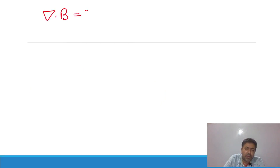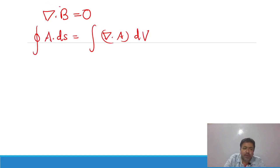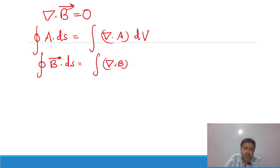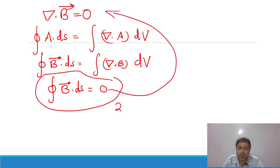Now we convert the third Maxwell equation — the non-existence of monopole — into integral form. This is ∇·B = 0. Since divergence is involved, we apply the divergence theorem for vector B: ∮B·dS = ∫(∇·B)dV. Since ∇·B = 0, we get ∮B·dS = 0. This is the integral form of the third Maxwell equation.